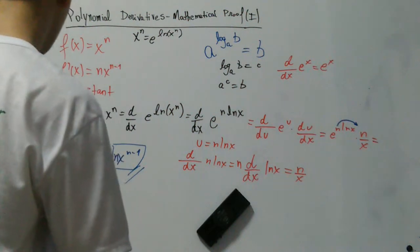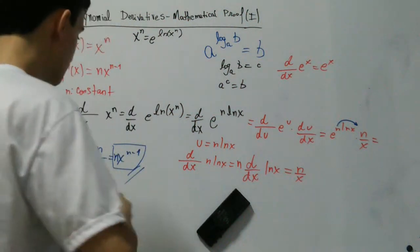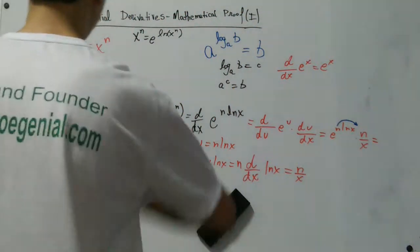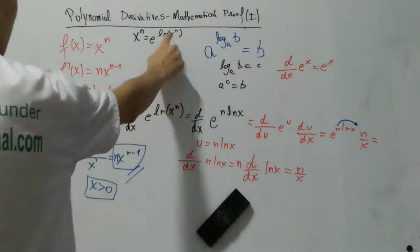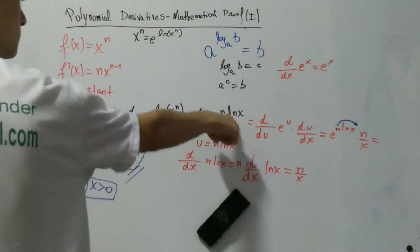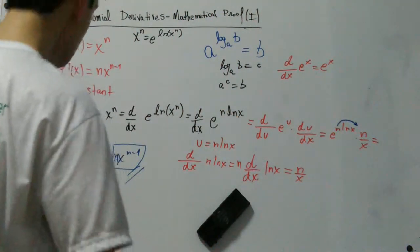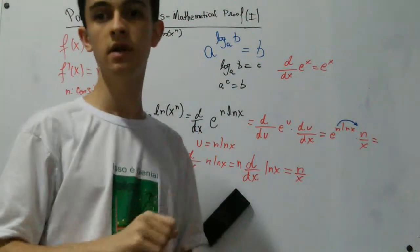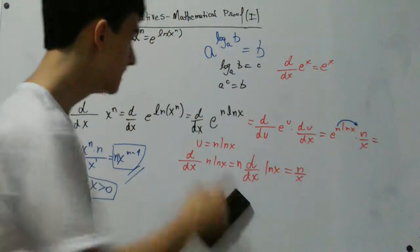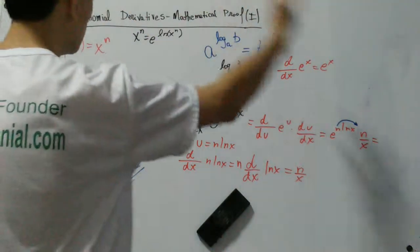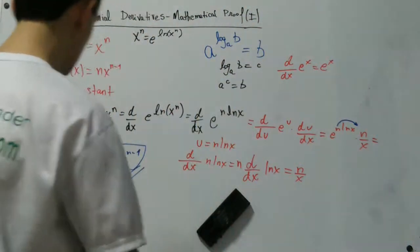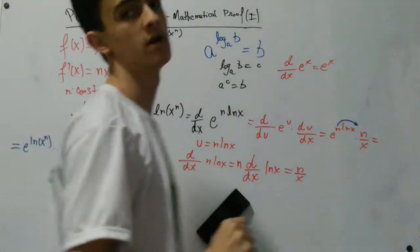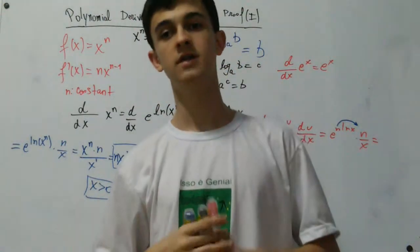There is a restriction in this mathematical proof: x must be greater than 0. Because we used a logarithm, and x was the argument of the natural log. The argument of the natural log must be greater than 0 — this is something we see in the theory of logarithms; for the logarithm to exist, this number must be greater than 0. So in this mathematical proof we have the restriction that x must be greater than 0. This is the first mathematical proof of the derivatives of polynomial functions. Thank you very much for watching, and I'll see you in the next video.